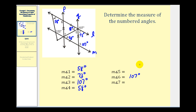Angle five and angle seven are the remaining angles. Notice that angle five and angle seven would be alternate interior angles where P and Q are the parallel lines and this segment would be the transversal. So if we can find one of them, we also know the measure of the other.